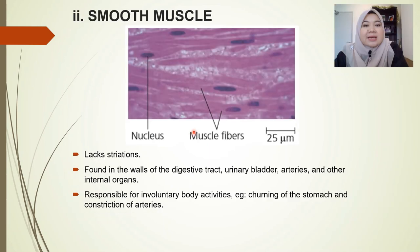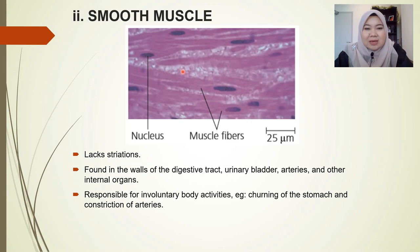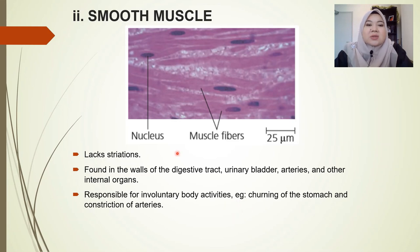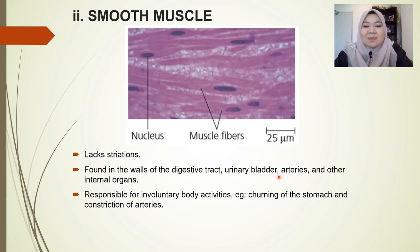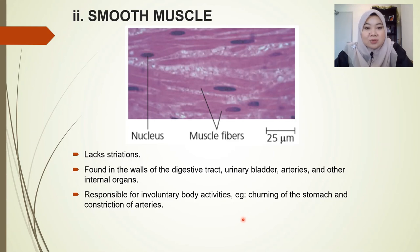The next one is smooth muscle. Smooth muscle lacks striations — you can see it has fewer stripes in its structure. It is found in the wall of the digestive tract, urinary bladder, arteries, and other internal organs. Smooth muscles are responsible for involuntary body activity — actions we do without conscious control, like churning of the stomach and constriction of arteries.